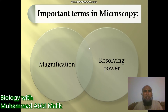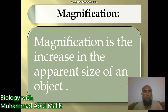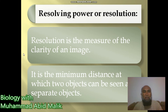Now we move to important terms in microscopy. The first is magnification, and the second is resolving power or resolution. Magnification is the increase in the apparent size of an object. Resolution is the measure of clarity of an image — in other words, it is the minimum distance at which two objects can be seen as separate objects.